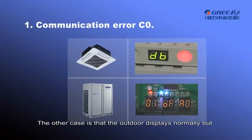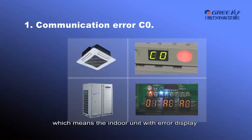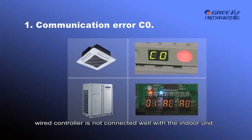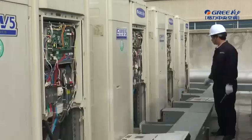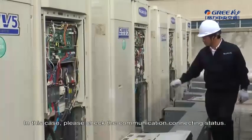The other case is that the outdoor display is normal, but some indoor units display C0. This means the indoor unit with the error display is not connected well with the main communication cable, or the controller is not connected well with the indoor unit. In this case, please check the communication connecting status.